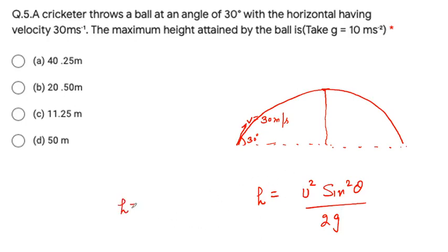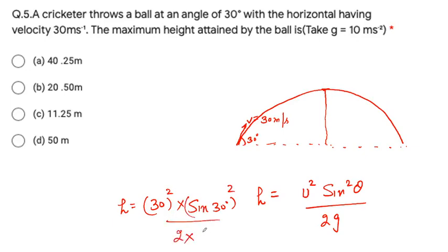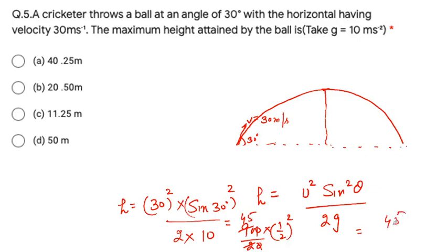This is the formula to find the maximum height: H = U² sin²θ / (2g), where U is the initial velocity, θ is the angle, and g is the acceleration due to gravity.